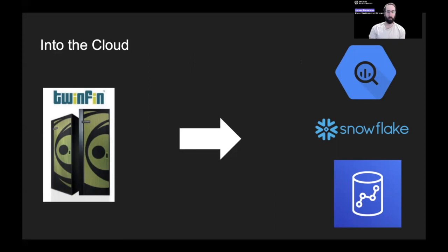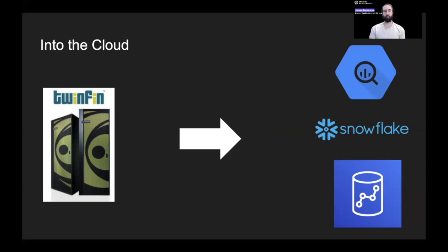The next thing that happened was, when column-store databases first appeared, they were all on-prem. That really fancy-looking thing on the left is a Matiza Twinfin appliance — I actually worked with one of these. It was one of the early columnar MPP, or Massively Parallel Processing, data warehouses, and it was a total game changer. Performance-wise, you could do things you just couldn't do on traditional row-based databases. The downside was you literally had to get those appliances into your server room, set up, running, and maintained. If you wanted to scale up, you literally had to order more hardware.